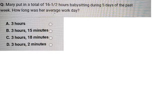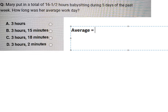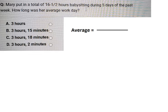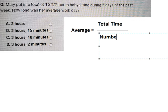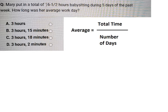The question asks us to find the average. We know that to find the average, we need to find the total time and divide by the number of days. The total time is provided here, and the number of days is 5.